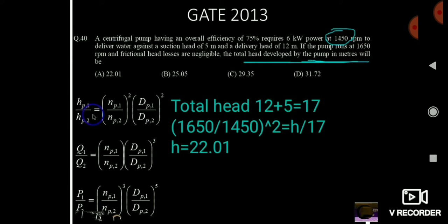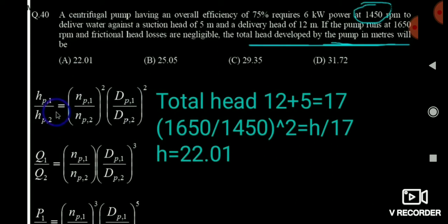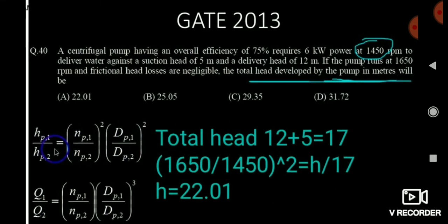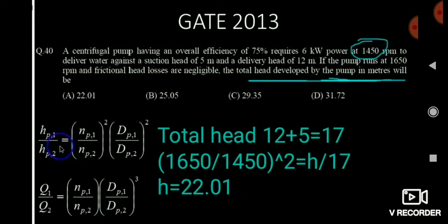Calculate the total head, which is 17 meter. N1 = 1450 and N2 = 1680 RPM are given. Since head is directly proportional to N², using H2/H1 = (N2/N1)², we can calculate H2 = 22.01 meter.